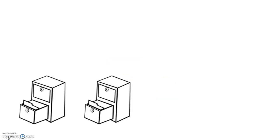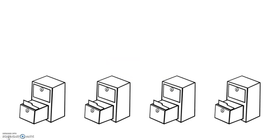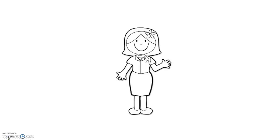Once information is transferred to your long-term memory, it can be filed away indefinitely. Your memory is capable of relatively permanent storage. You probably remember the name of your kindergarten teacher, for example, or the year of your favorite trip or concert.